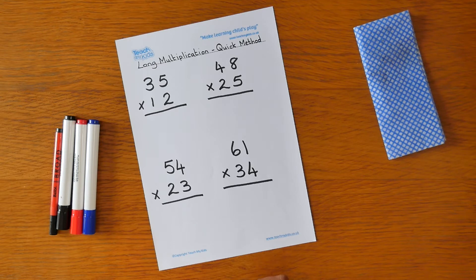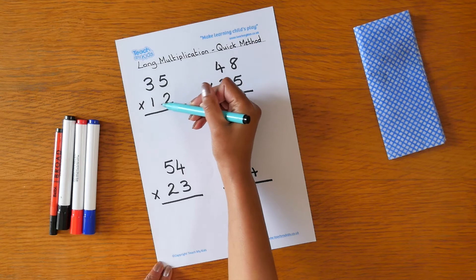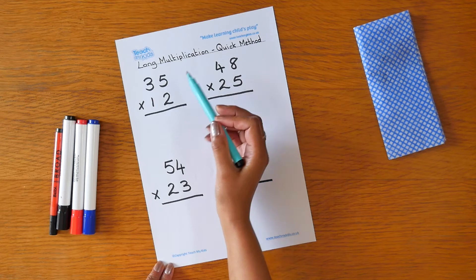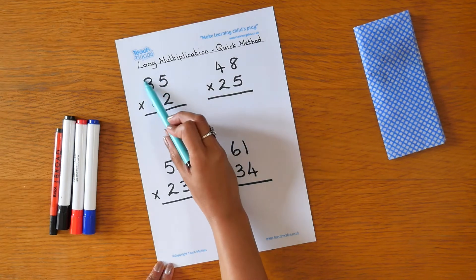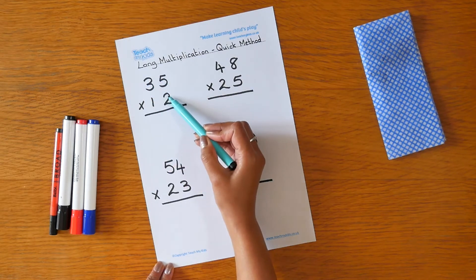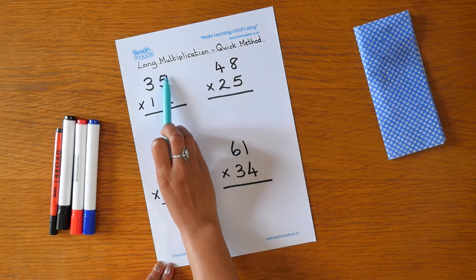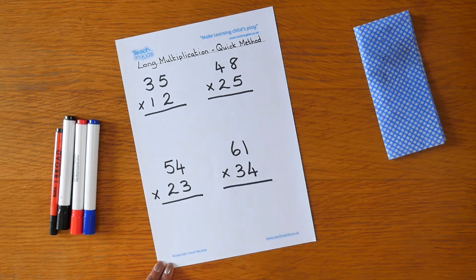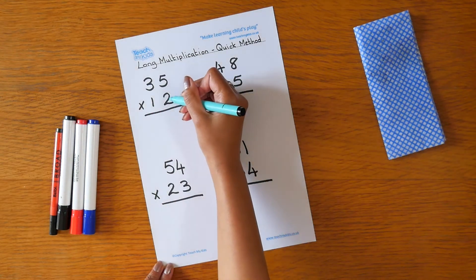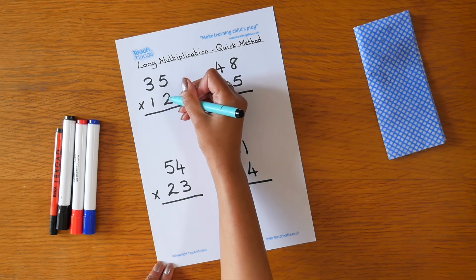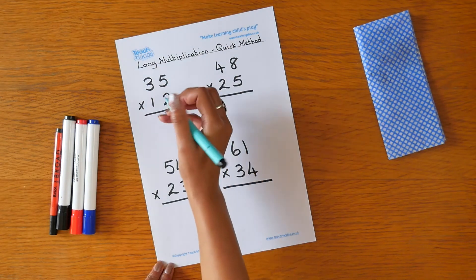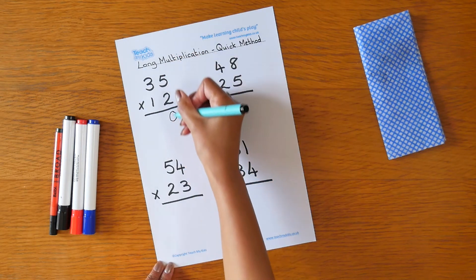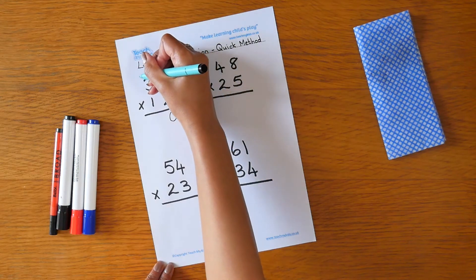Let's start with the sum 35 times 12. We start by multiplying the top number by the units, and then we'll move on to multiplying the top number by the bottom tens. So we start with 2 times 5. 2 times 5 is 10. We place the 0 in the units column and we carry the 1.